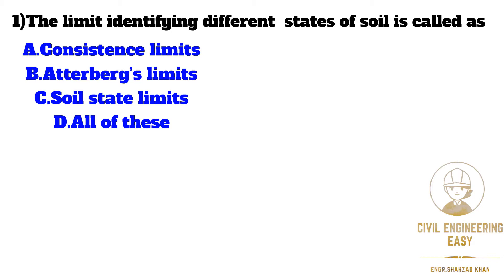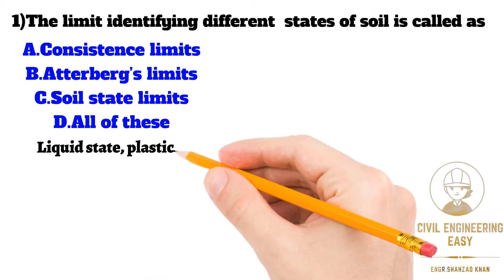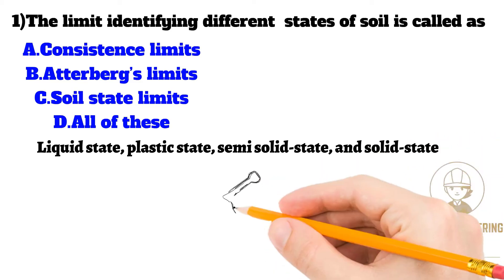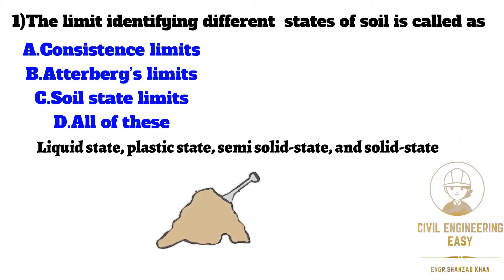Consistency is a term which is used to describe the degree of firmness of soil. Consistency of soil is indicated by terms such as soft, medium, and hard. Based on the water content, the soil may appear in four states: liquid state, plastic state, semi-solid state, and solid state. The water content at which the soil changes from one state to another is known as consistency limit. Atterberg demonstrated the significance of these limits in understanding the behavior of clay.